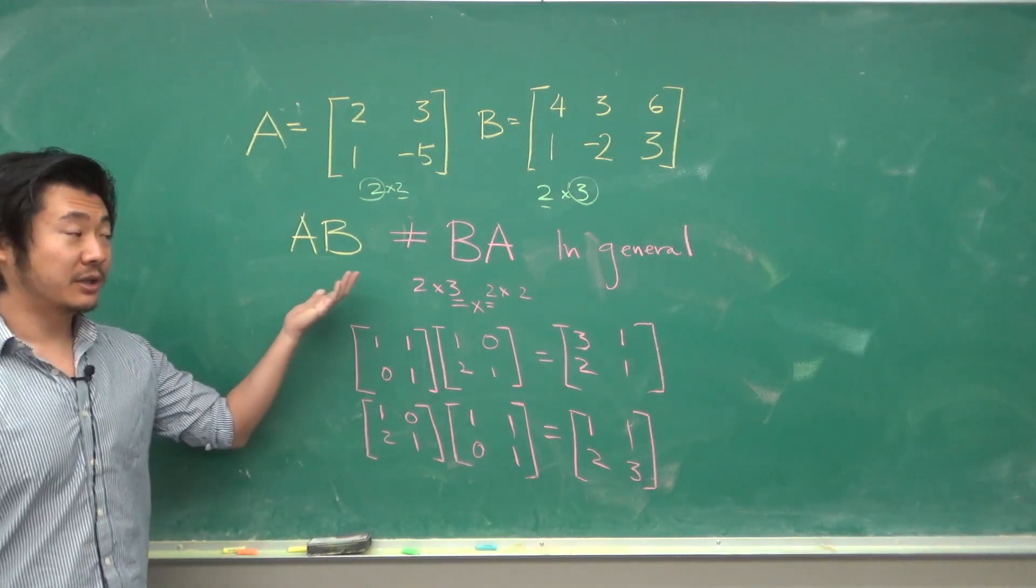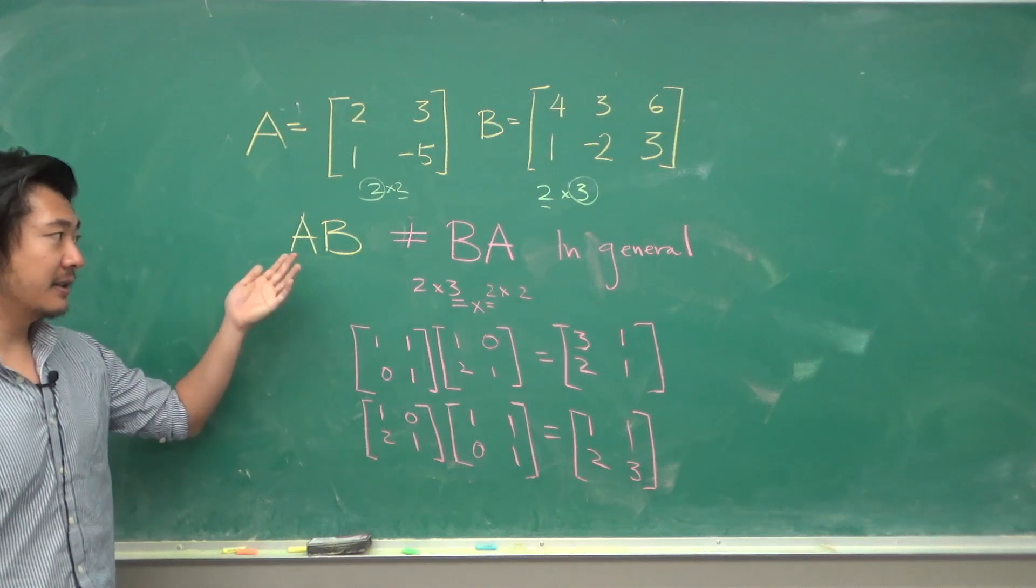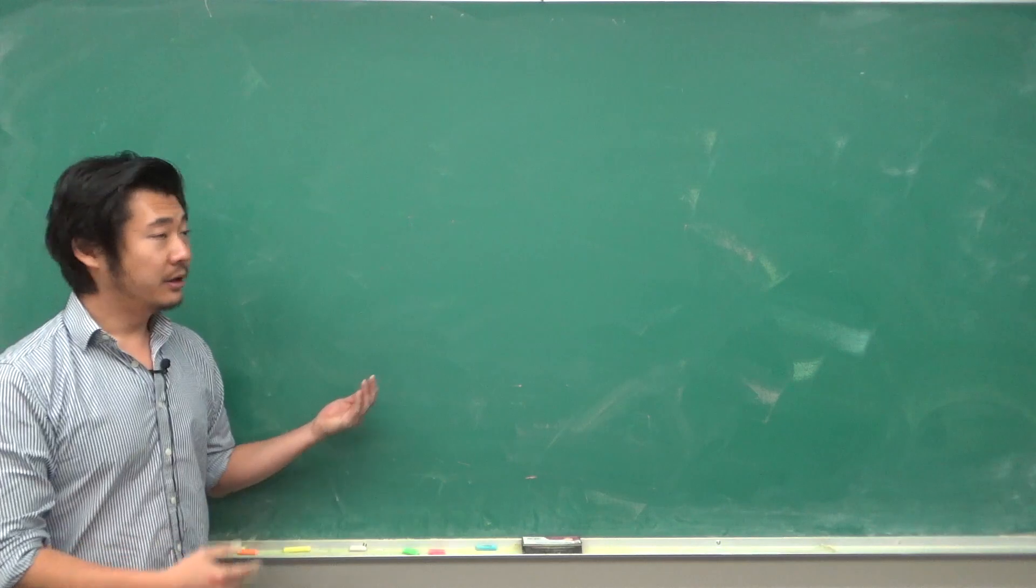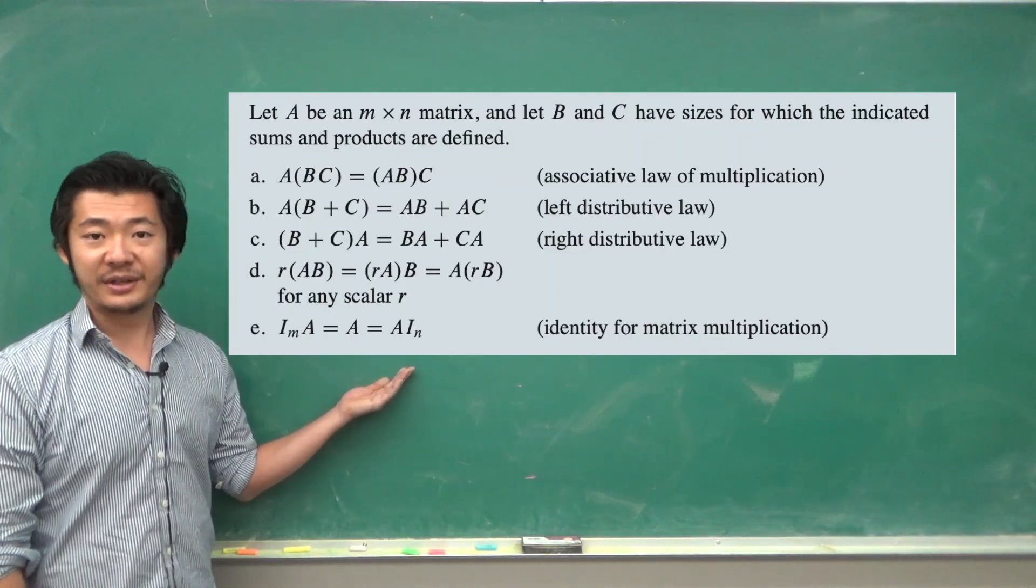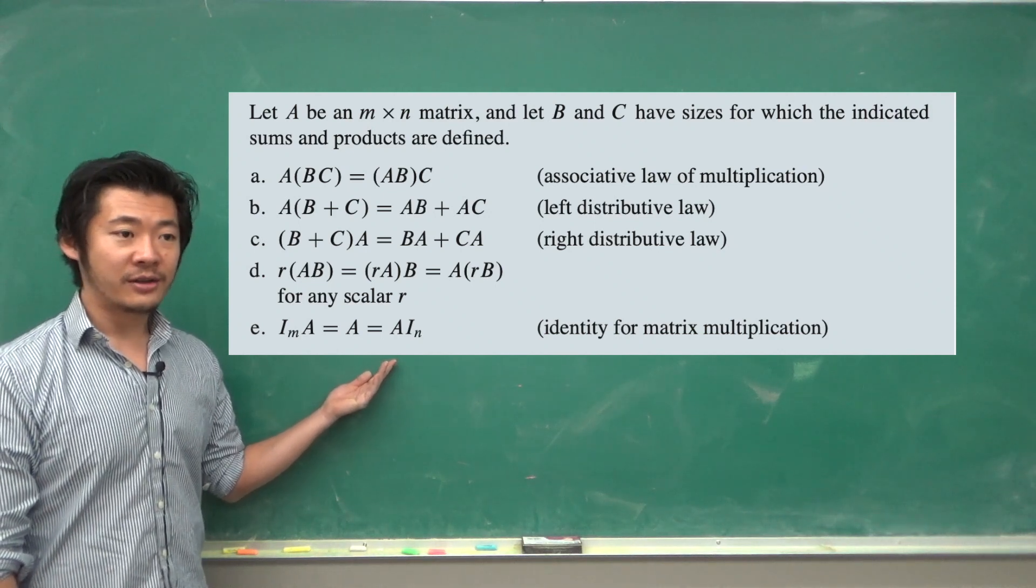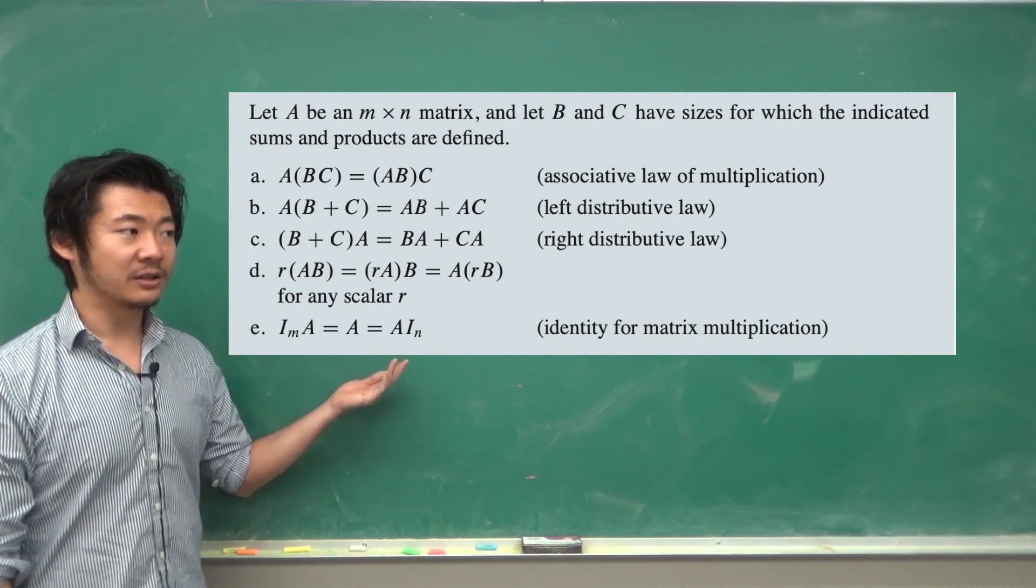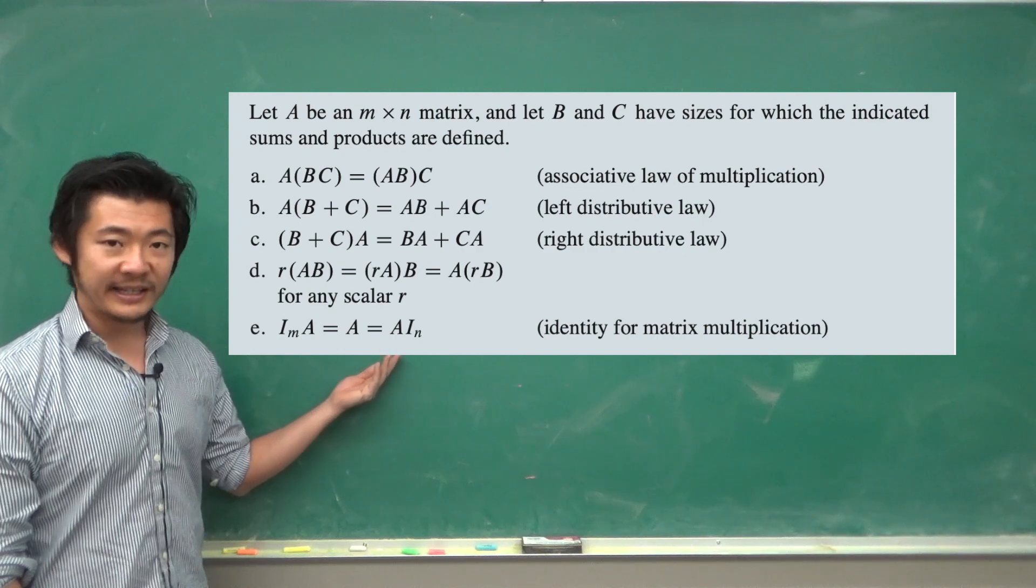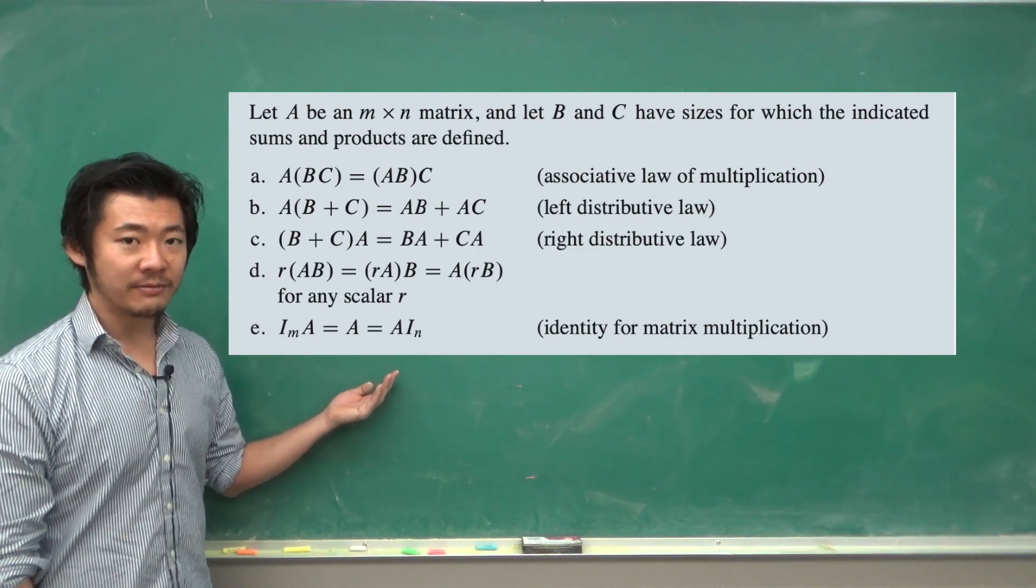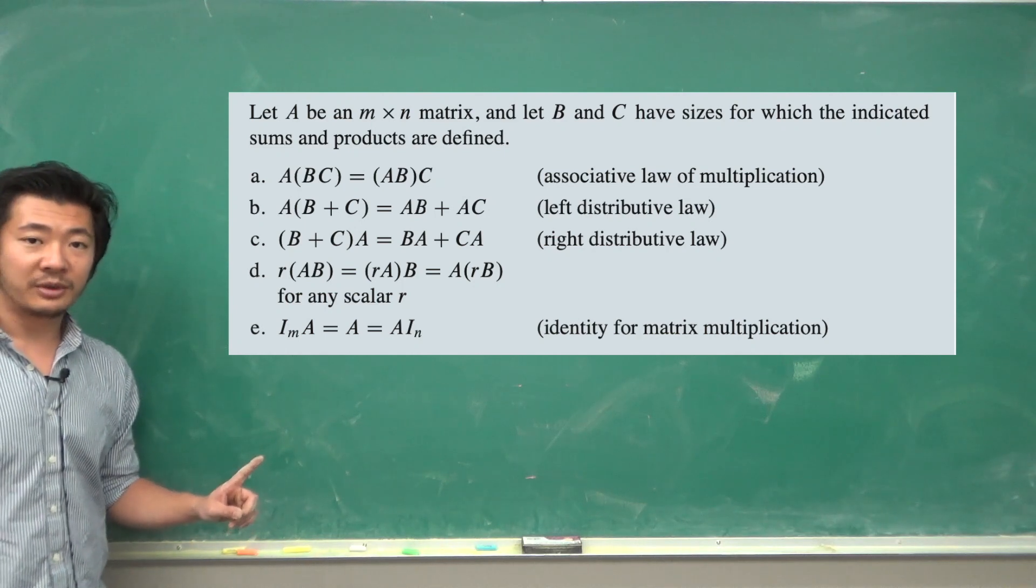Of course, sometimes matrices do commute—that is, A times B is equal to B times A for special cases. Here are some additional properties of matrix multiplication. The most important thing is to make sure that when you multiply something on the left, you retain that. Which side you are multiplying matrices matters.